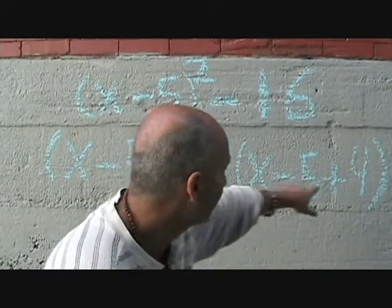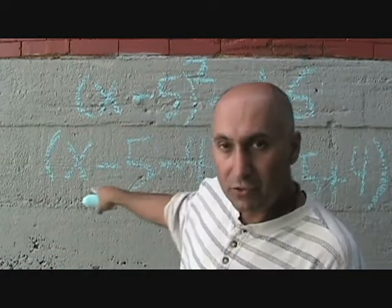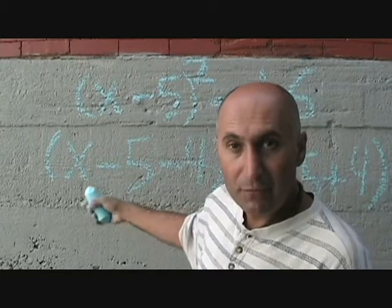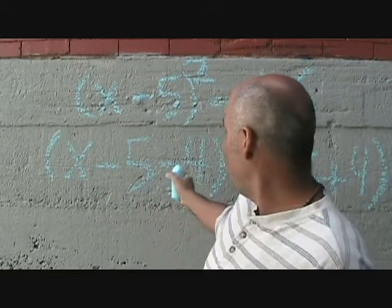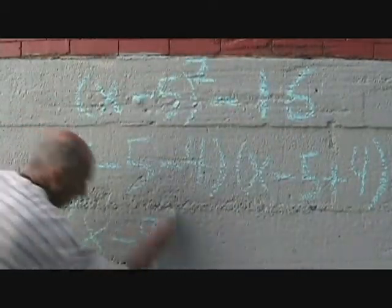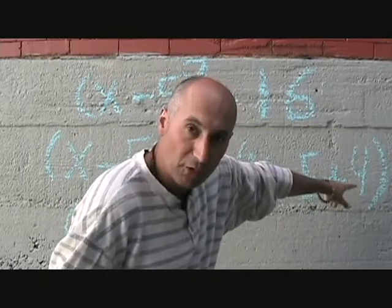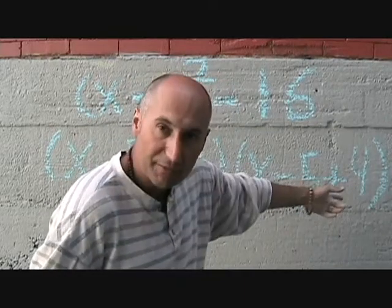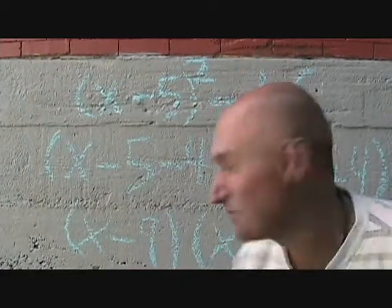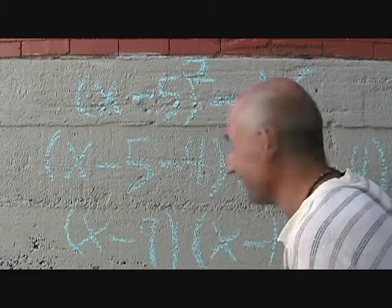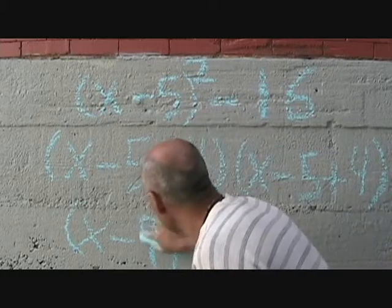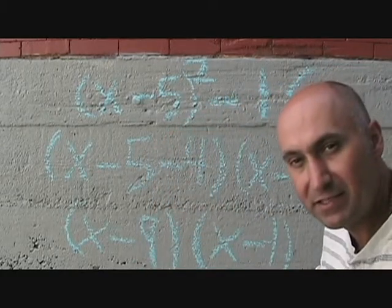You need to take it one more step because you can combine the constants. This becomes (x - 5 - 4): the sign in front of the number rolls with the number, so negative 5 minus 4 is negative 9, giving x - 9. And on the other side, negative 5 plus 4 is negative 1. So the final factored form is (x - 9)(x - 1).